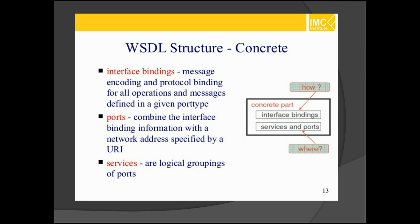Services and ports refer to where the ports and services will work. Interface binding refers to how it will communicate — that is, message encoding. By using the message, you can specify encoding formats and protocol bindings for different operations and messages defined in a given port type.